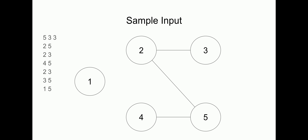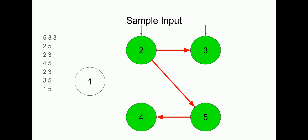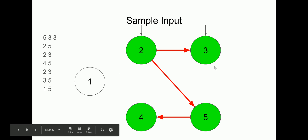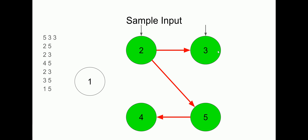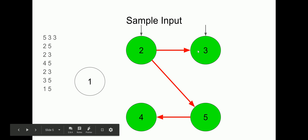How can a program tell if two cows are on the same component? Let's look at the sample input. For the first query — will cows two and three meet — we start at cow two and perform a DFS to see all the cows it can possibly visit. Cow two can visit itself, cow three via a direct edge, cow five via a direct edge, and cow four via cow five. So cow two can visit all the nodes currently in its component. Since cow three is marked as visited, we know cow two can reach cow three.